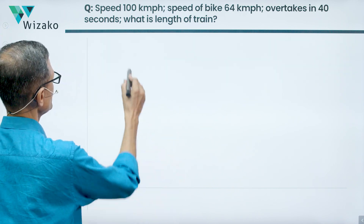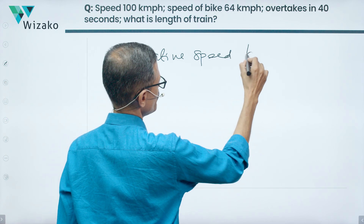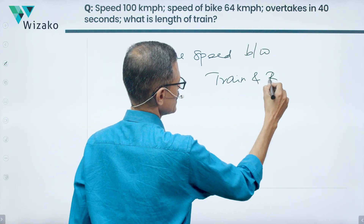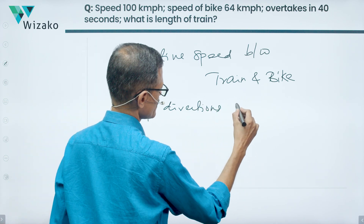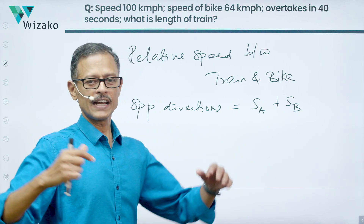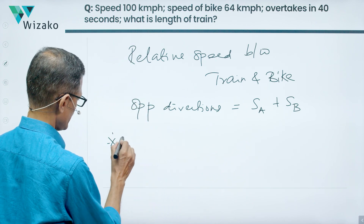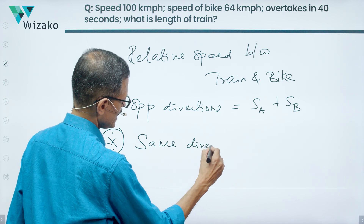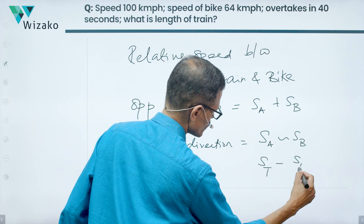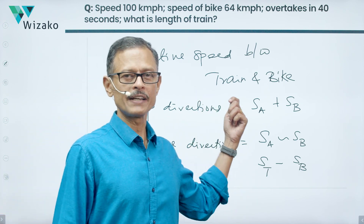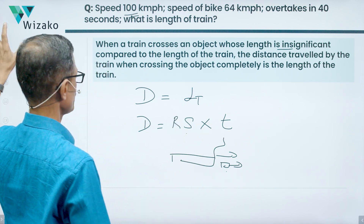Because the bike is moving, we use relative speed. Quick concept recap: if two objects travel in opposite directions, their relative speed is the sum of their speeds (Sa + Sb). If they travel in the same direction, the relative speed is the difference between their speeds. In this question the train and bike are going the same direction, so relative speed = speed of train minus speed of bike. We substitute relative speed into the distance formula in place of plain speed.